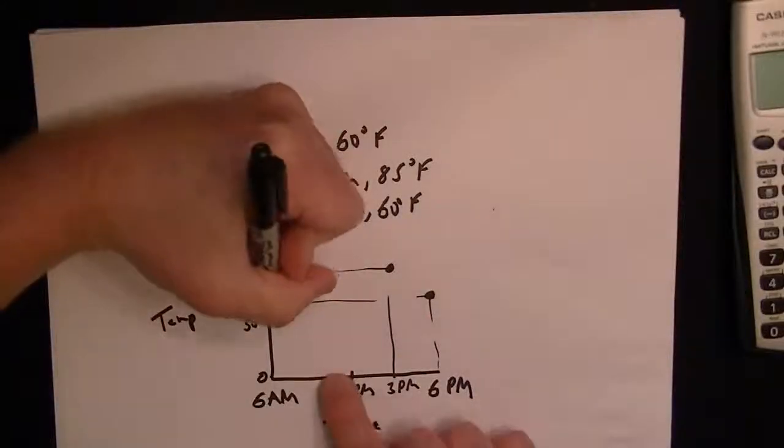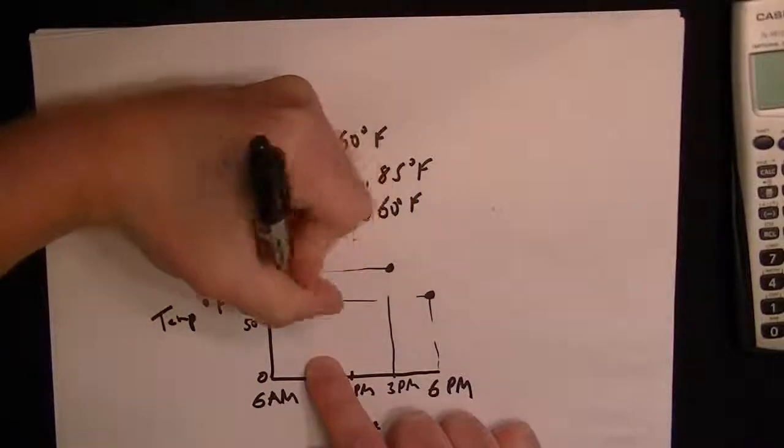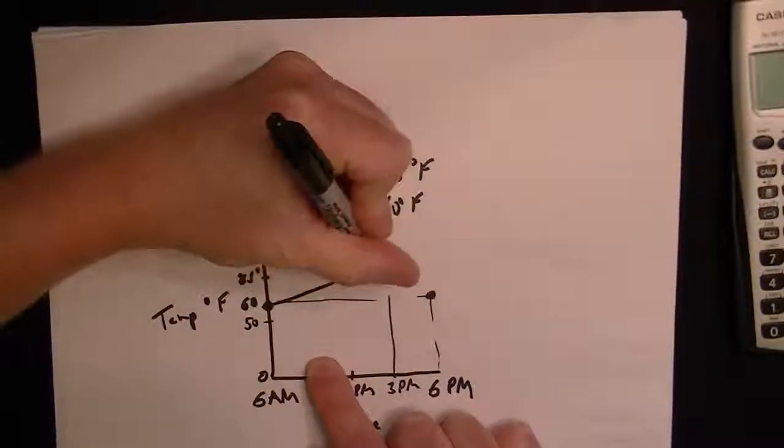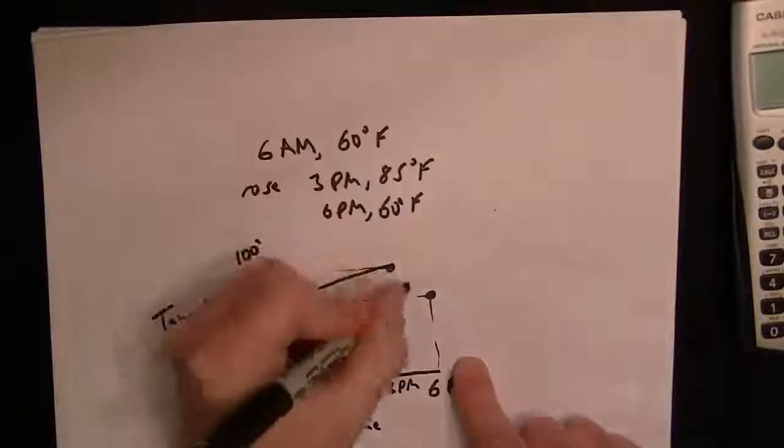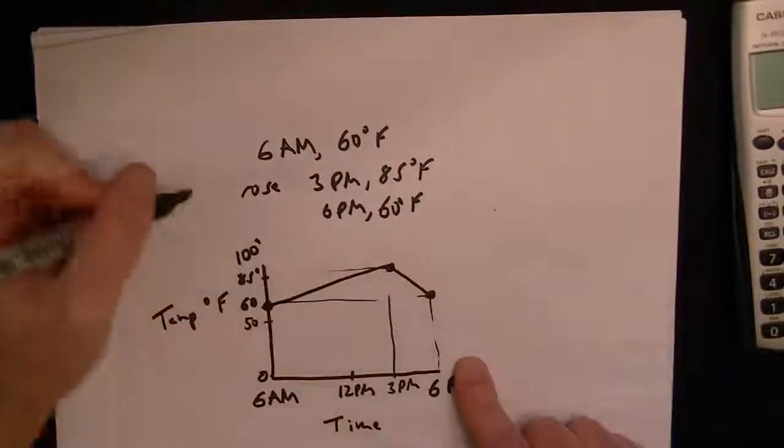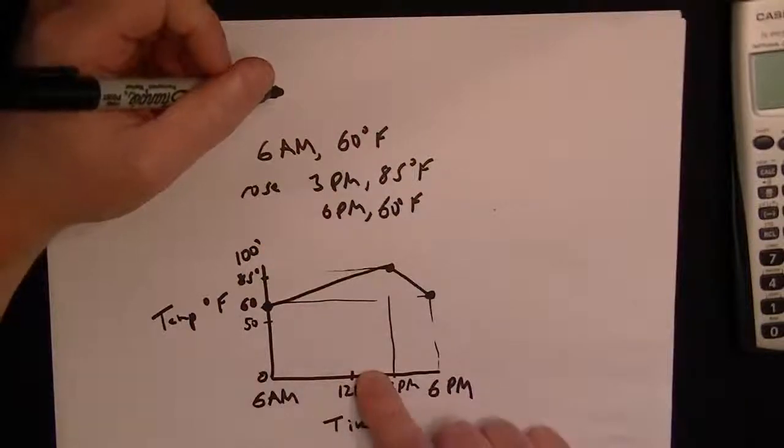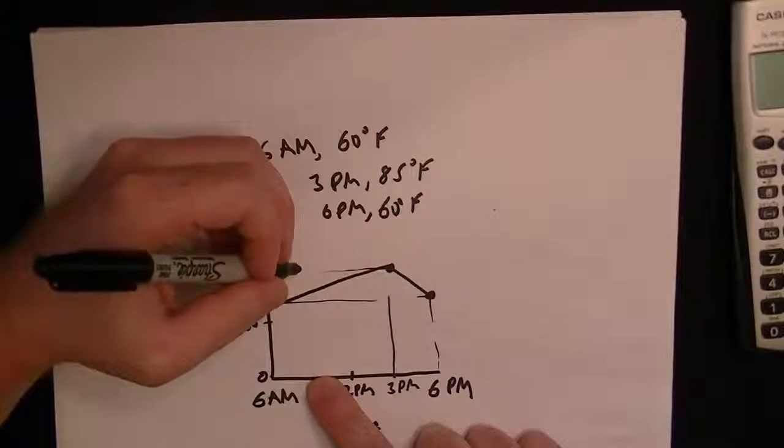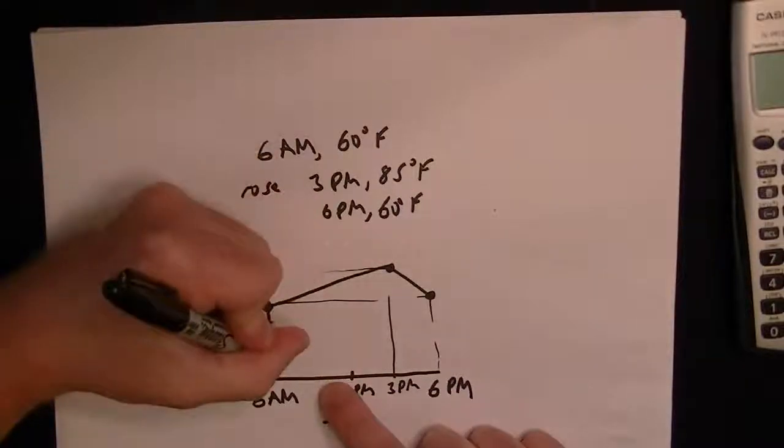So since it's a straight steady increase, it's just going to be a straight line between the points. So you just connect the dots. So that's going up, then it goes back down. So this is how you plot it. So on the test they're going to give you some graphs that maybe don't make sense.